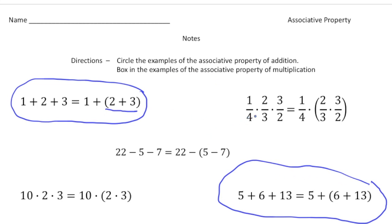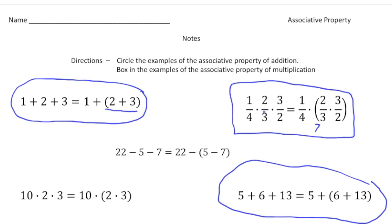Here we have one-fourth times two-thirds times three-halves equals one-fourth times two-thirds times three-halves, with parentheses added — that's the associative property of multiplication. Then 22 minus 5 minus 7 equals 22 minus (5 minus 7): because we have subtraction, this is neither the associative property of addition nor multiplication. Finally, 10 times 2 times 3 equals 10 times 2 times 3, with parentheses added — that's the associative property of multiplication.